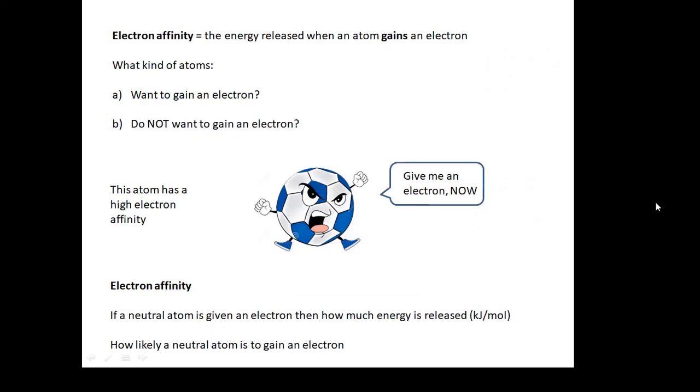Electron affinity. This is a little bit tricky. It's the energy released when an atom gains an electron. So if an atom gains an electron, then energy might be released. What kind of atoms want to gain an electron? And what kind of atoms don't want to gain an electron? This particular atom here has a high electron affinity—give me an electron. If a neutral atom is given an electron, then how much energy is released? It's how likely a neutral atom is to gain an electron. It's almost the opposite of ionisation energy.